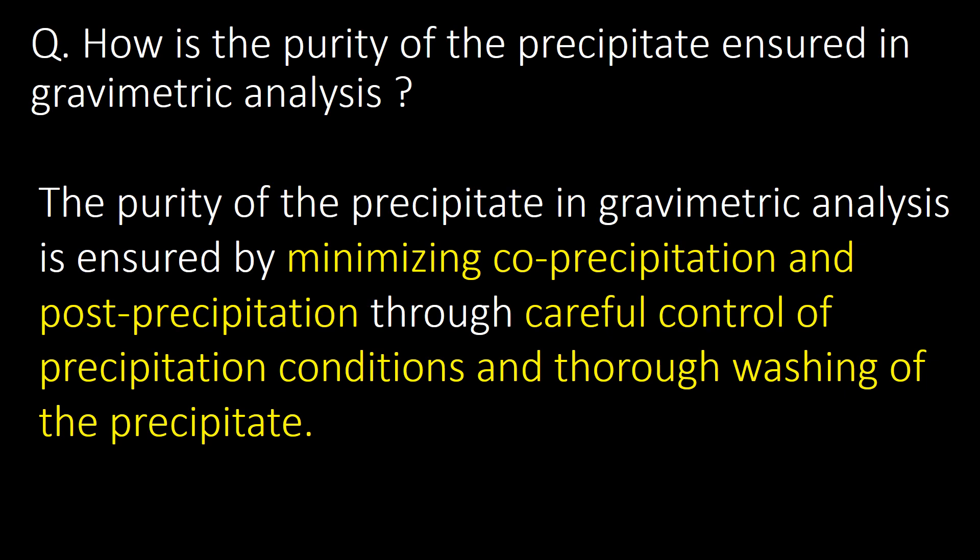How is the purity of the precipitate ensured in gravimetric analysis? The purity of the precipitate is ensured by minimizing co-precipitation and post-precipitation through careful control of precipitation conditions and thorough washing of the precipitate.